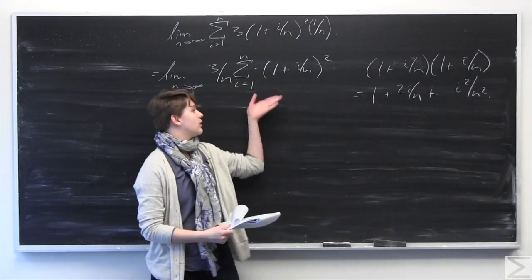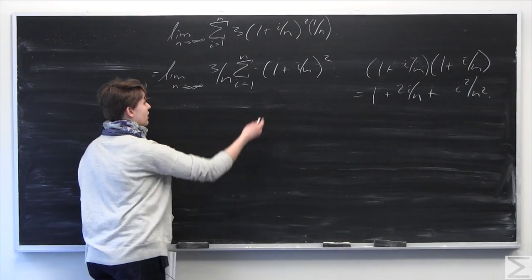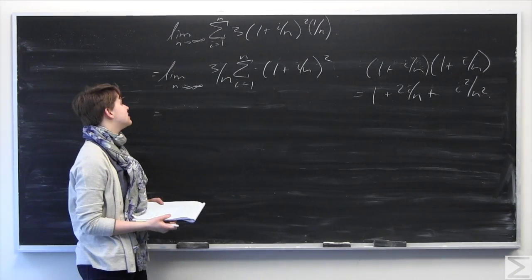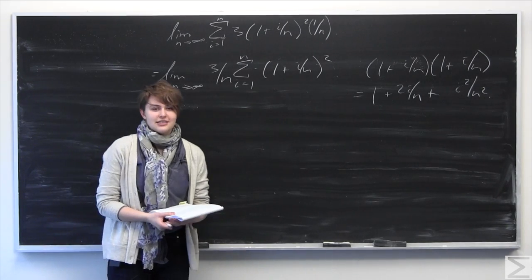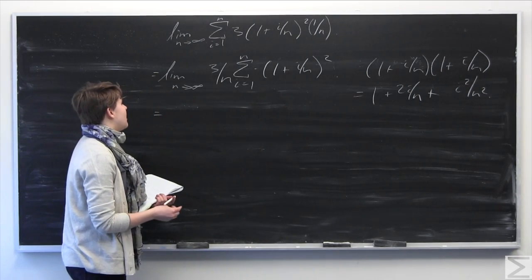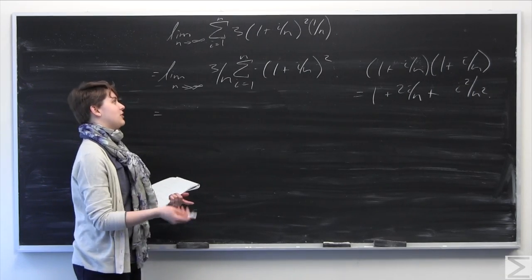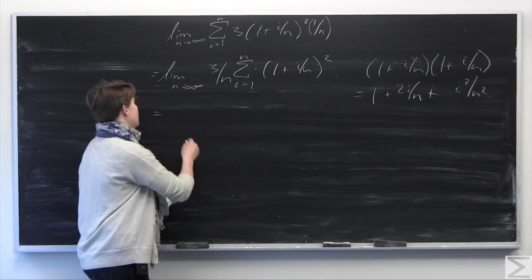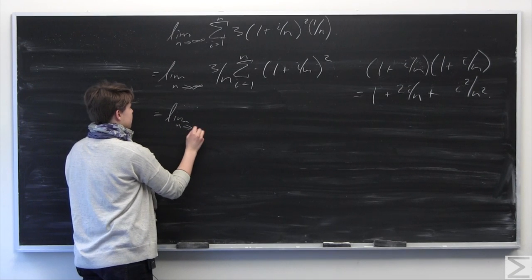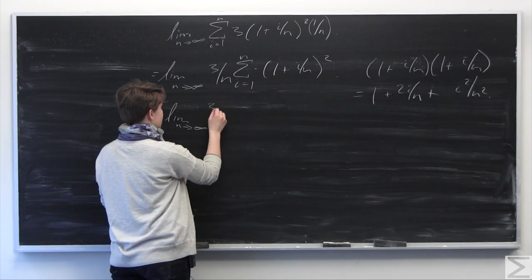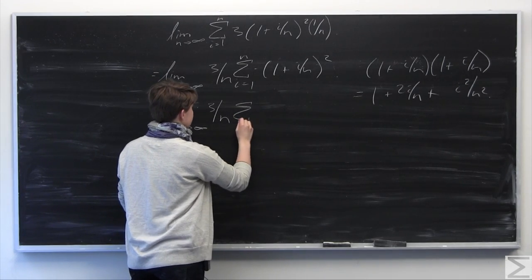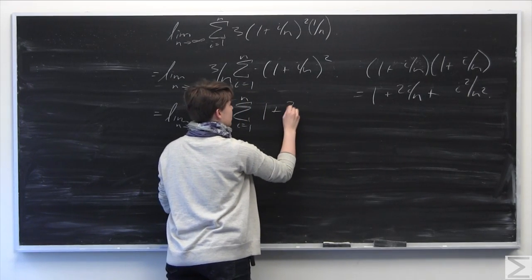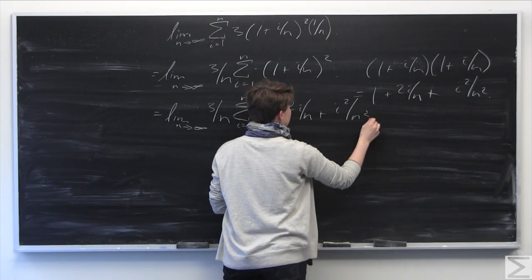I'm going to substitute this in. Remember to always bring down the limit when rewriting — it's a common habit in calculus when evaluating sequences and series to forget the limit, and if you forget it, it's just incorrect. So: limit as n goes to infinity of 3 over n times the sum from i equals 1 to n of (1 plus 2i over n plus i squared over n squared).